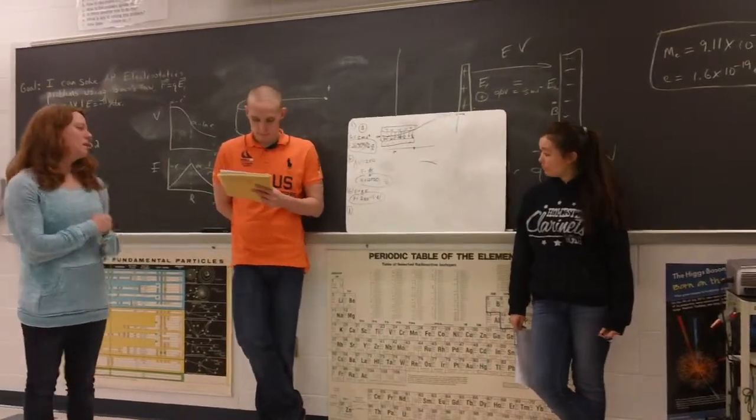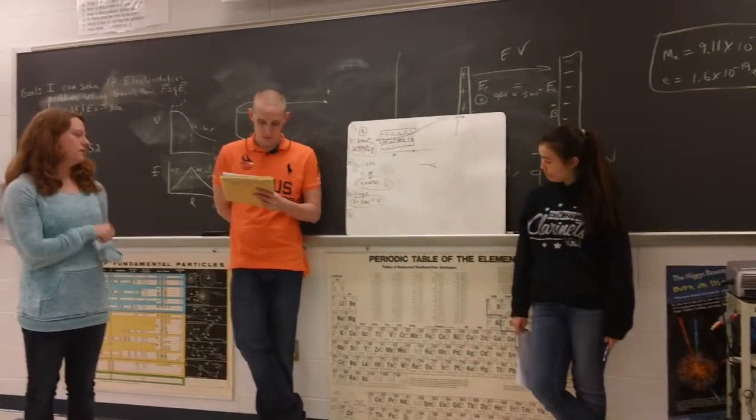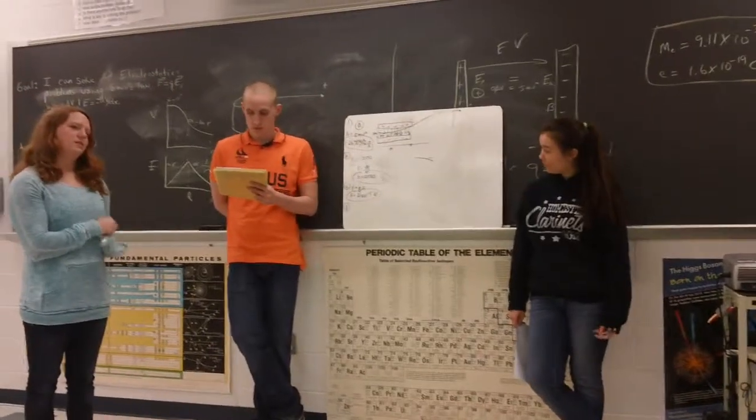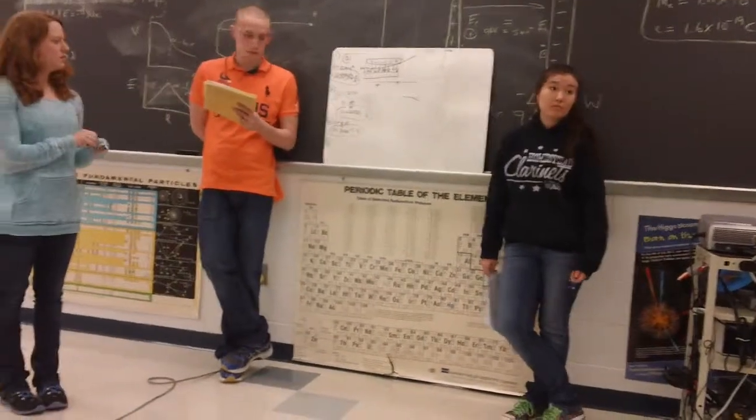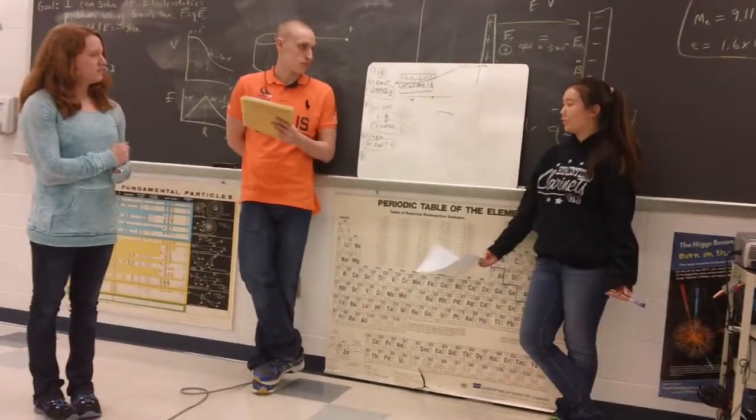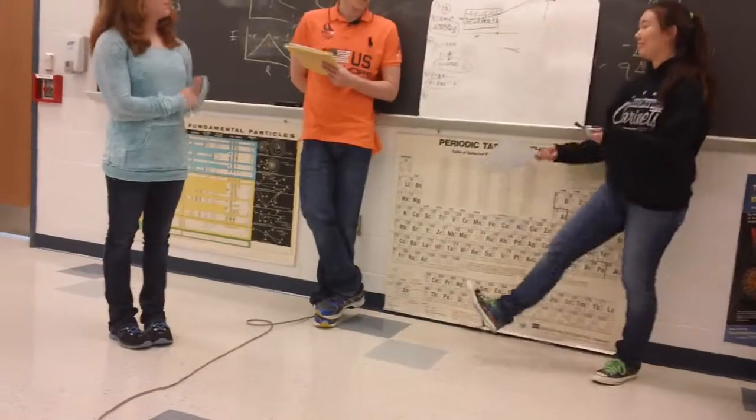And then part C: calculate the magnitude of the electric force acting on the electron while it's in region 1. So what was the big idea you used for this one? Well, the force - you multiply the charge and the E field to get the force, so that's what we did. Okay.